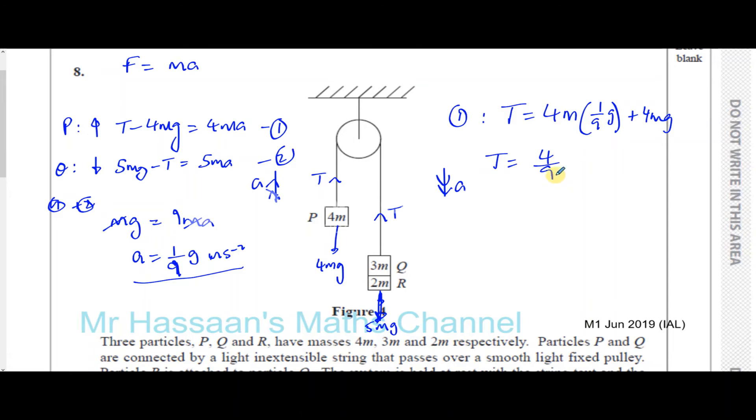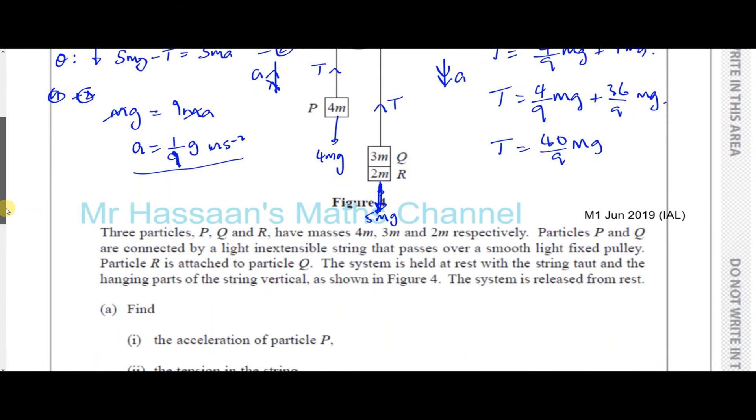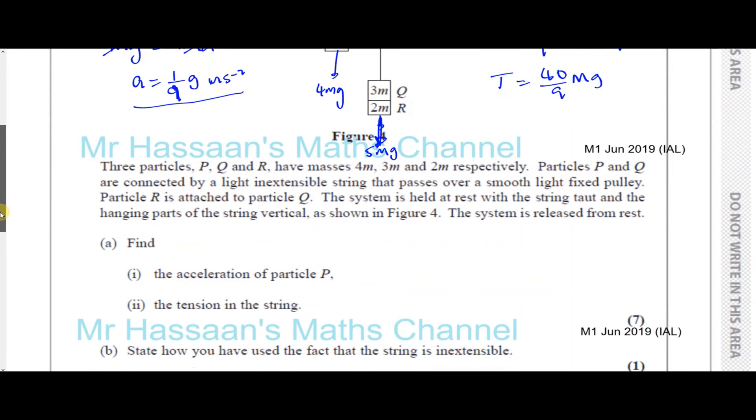So we can make this into one. That's going to be, if you make this over 9, that will be 4 over 9Mg plus 36 over 9Mg. That gives you 40 over 9Mg. So T is equal to 40 over 9Mg. Do they want answers in terms of G? No, they don't. So you could leave your answer like this if you want to.